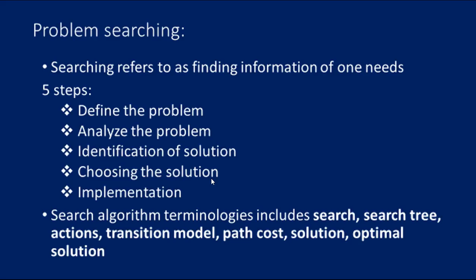So how can we measure a problem-solving performance? Before discussing different search strategies, the performance measure is very important. The performance of an algorithm should be measured consistently. There are four ways to measure the performance of an algorithm: completeness, optimality, time complexity, and space complexity. Completeness measures if the algorithm guarantees to find a solution. Optimality measures if the strategy finds an optimal solution. Time complexity is the time taken by the algorithm to find a solution. Space complexity is the amount of memory required to perform a search. The complexity of an algorithm depends on the branching factor, maximum number of successors, depth of the shallowest goal node, and maximum length of any path in the state space.